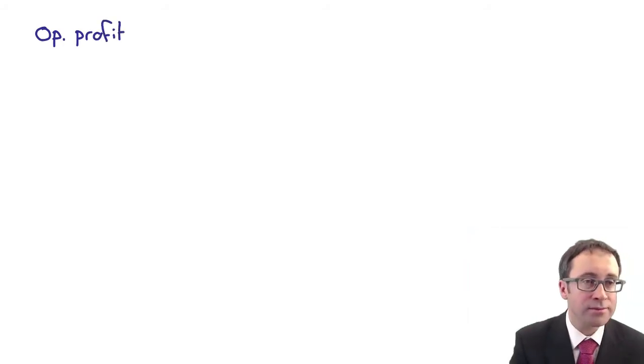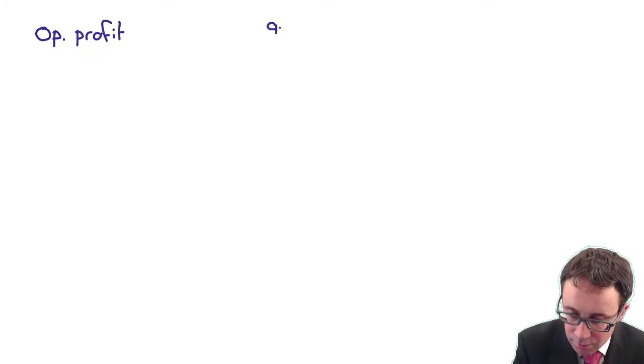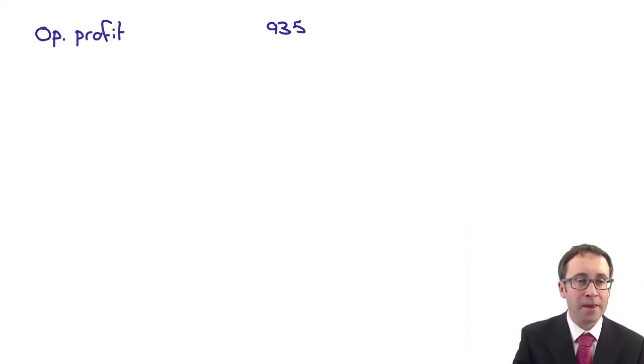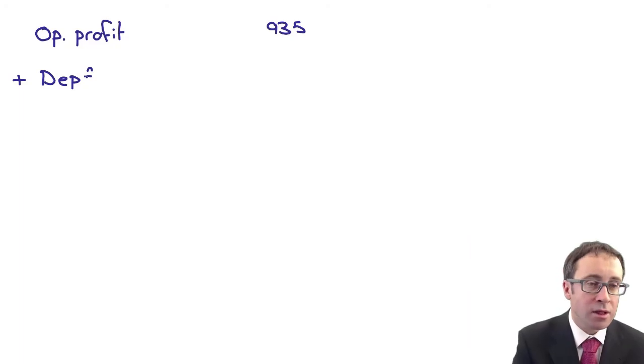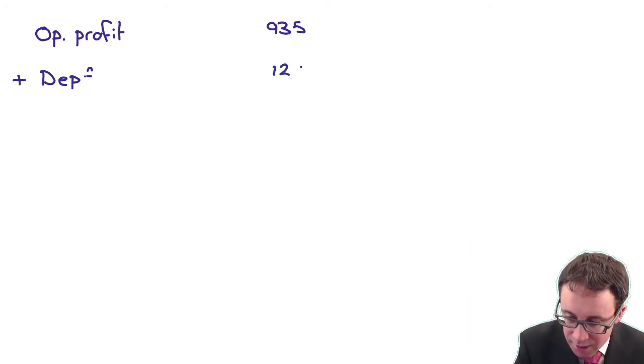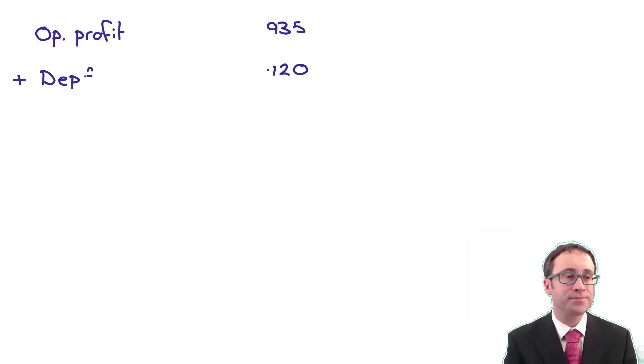So we want to work out the free cash flow first. We start off with our operating profit, is that there in terms of thousands, is that 935. We can then add back any depreciation. So the depreciation that we have is there as 120.